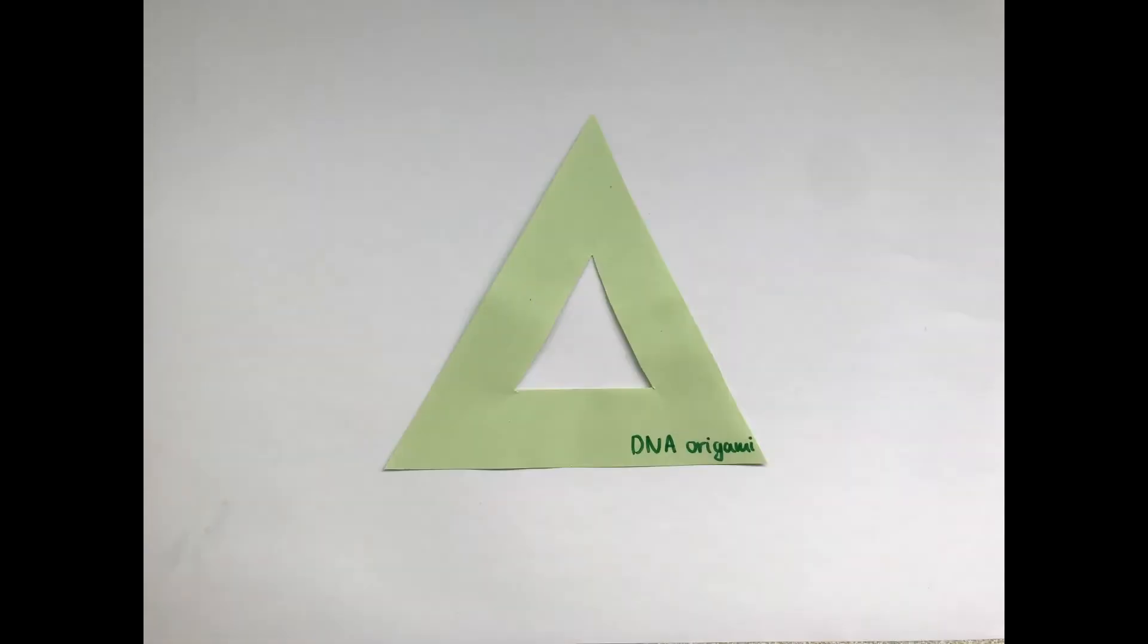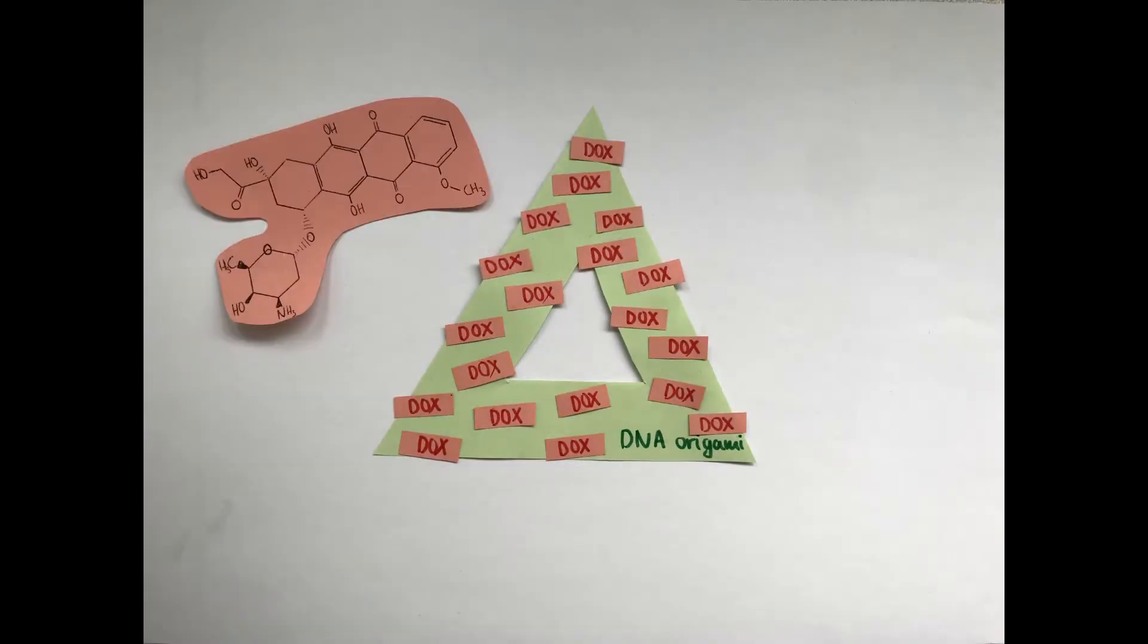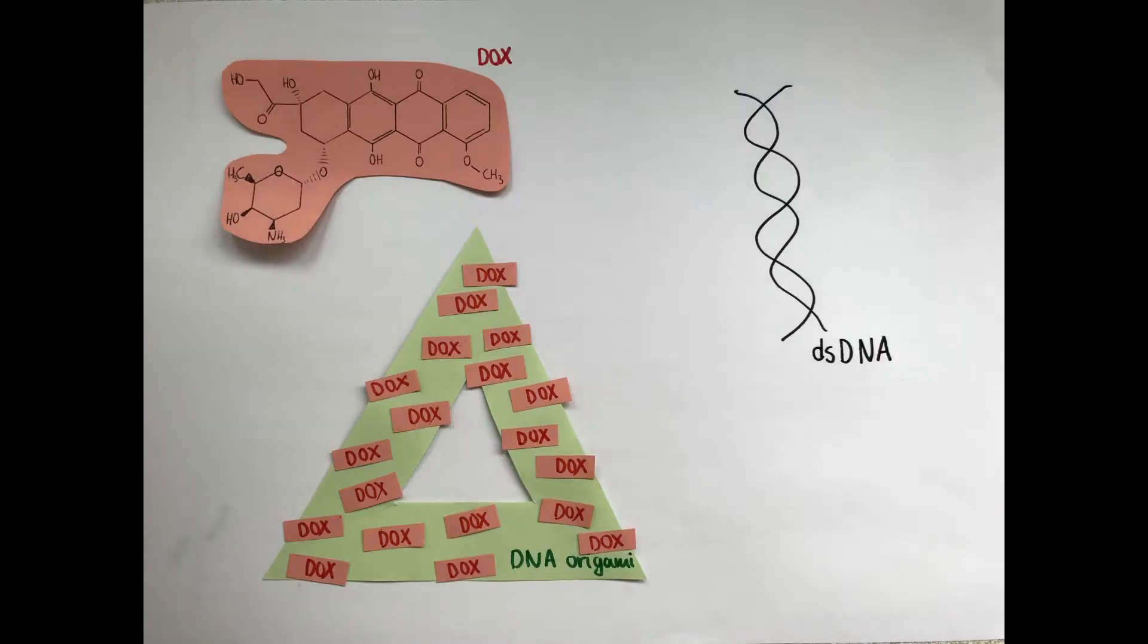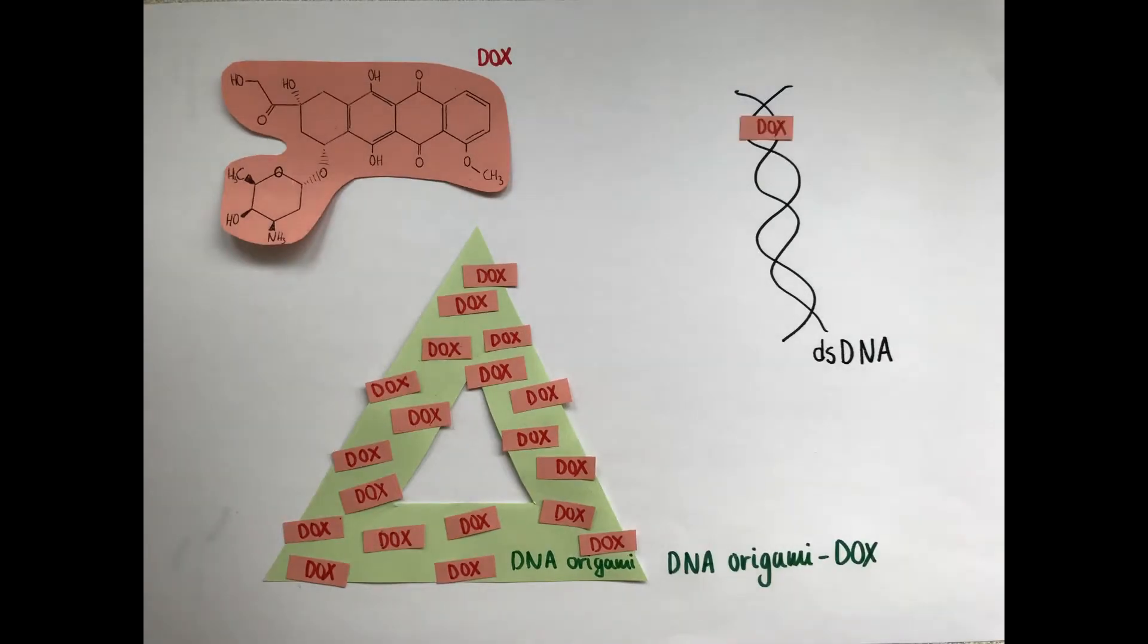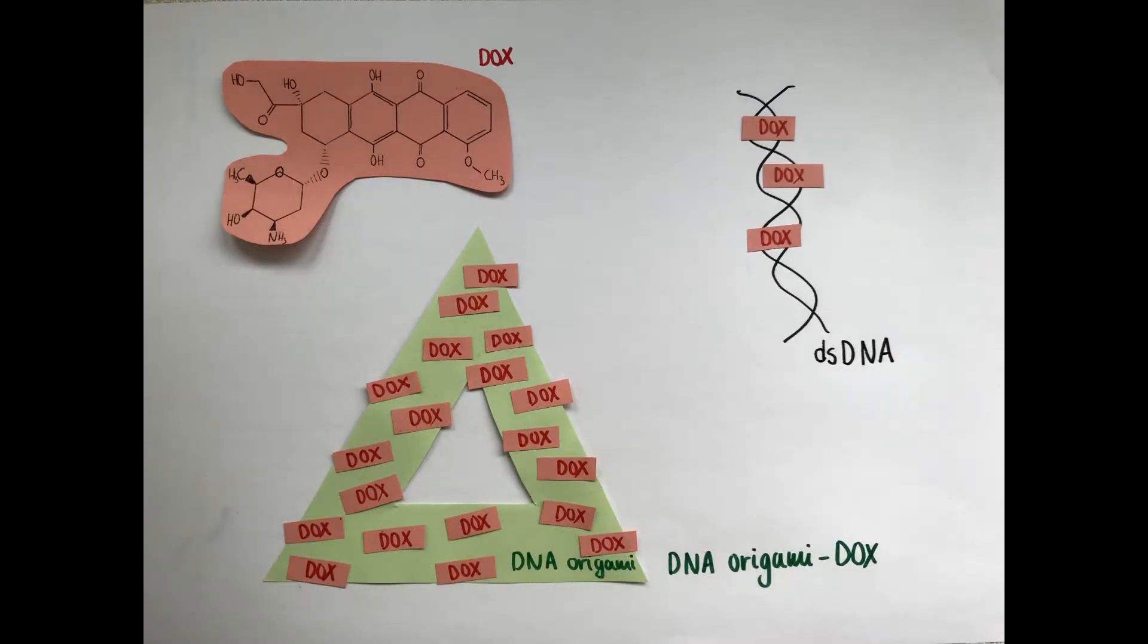Let's take an example. You want to kill cancer cells, so you load the DNA origami with doxorubicin. Dox is an antineoplastic chemotherapy drug that intercalates in the double-stranded DNA of the nanostructure.